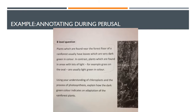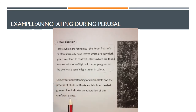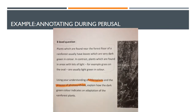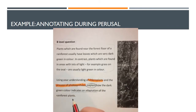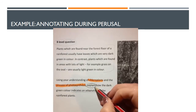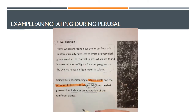That stimulus information is there to help guide my answer so I know what I'm talking about. This is the part of the question that actually tells me what to do: 'using your understanding of chloroplasts and the process of photosynthesis, explain how the dark green colour indicates an adaptation of the rainforest plants.' The key verb is 'explain' — so I need to ensure my answer is an explanation. It's not asking for analysis or anything else, just explanation.